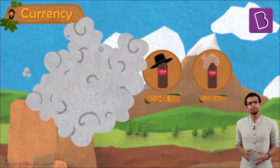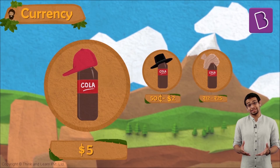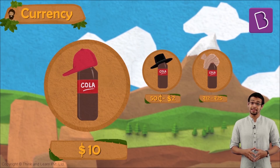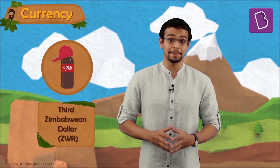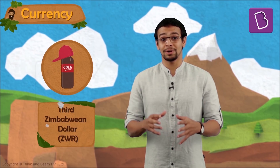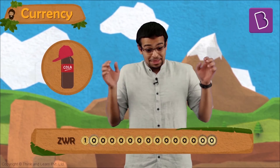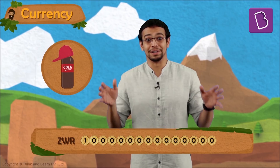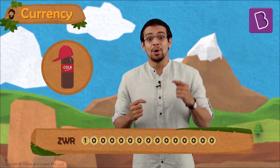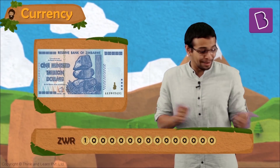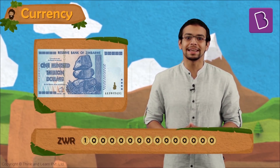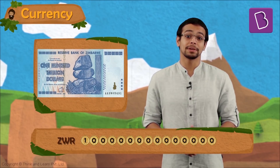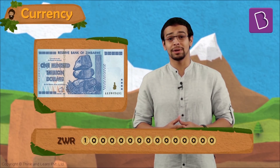How much do you think it will cost in, let's say, Zimbabwe? 1 dollar? 5 dollars? 10 dollars? This is a very interesting fun fact. In something called the 3rd Zimbabwean dollar, a bottle of cola could cost as much as 1 followed by many, many zeros — that many Zimbabwean dollars. And Zimbabwe even had a single note printed for that denomination. The third Zimbabwean dollar does not exist anymore — it's kind of gone extinct and is not in the news anymore.